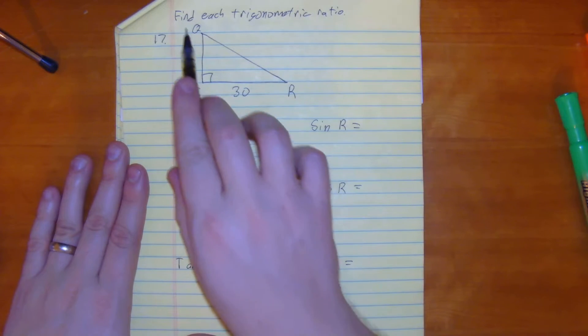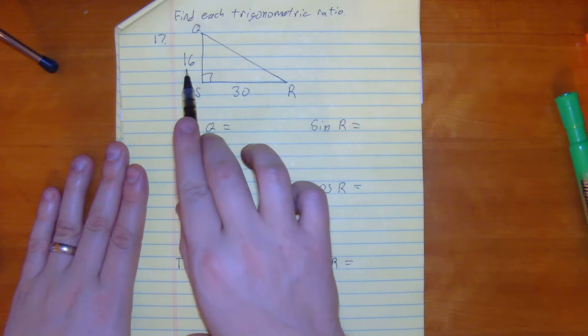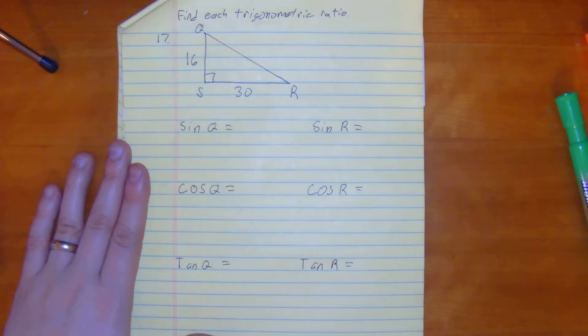We're looking at number 17. It says find each trigonometric ratio. We're given our legs, but we're not given our hypotenuse.